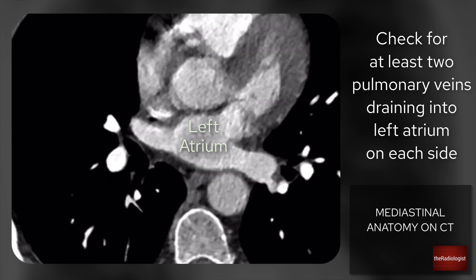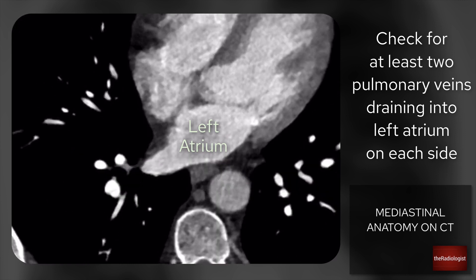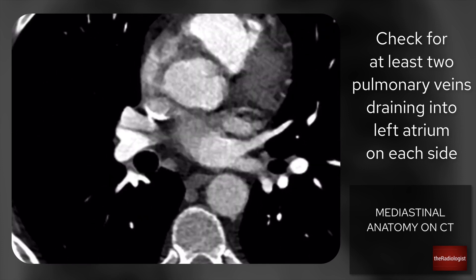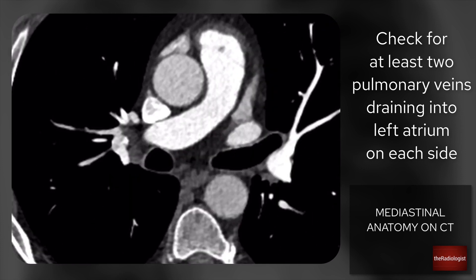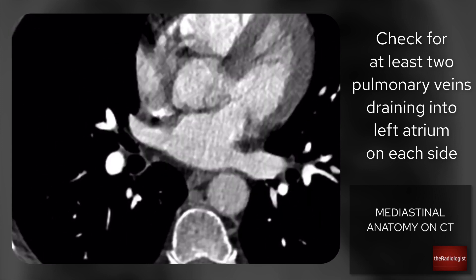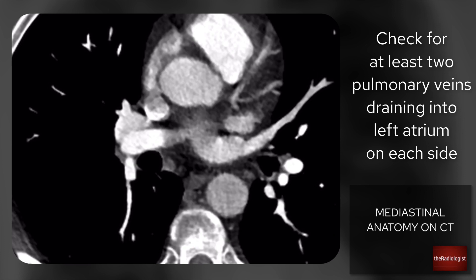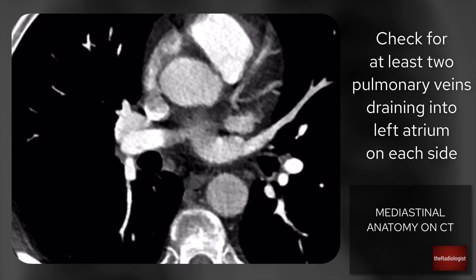In this case I can see a superior pulmonary vein and an inferior pulmonary vein on the right — two on the right. On the left we've got a superior, an inferior, and also a third pulmonary vein, which is okay. You can have variations where you get more than the normal two on either the right or the left, but any less than two should raise your suspicions.